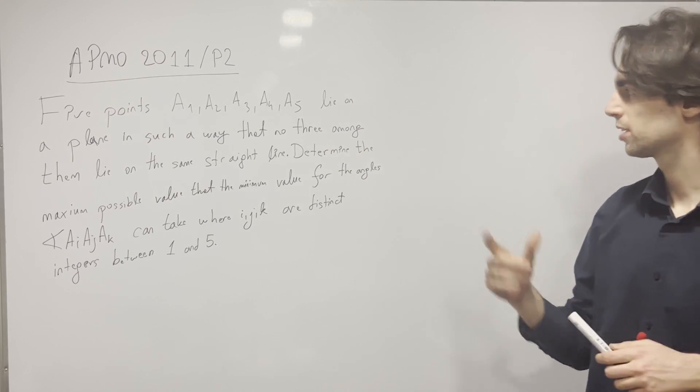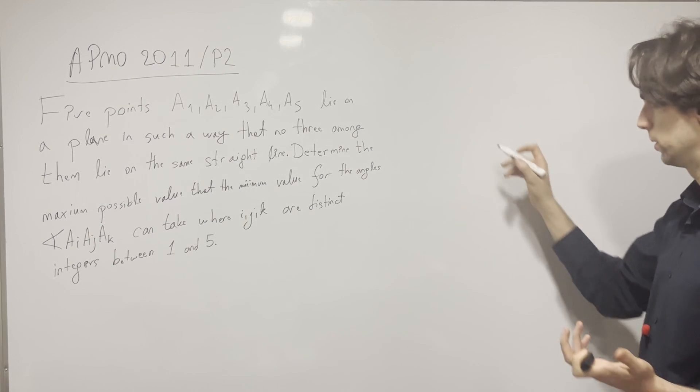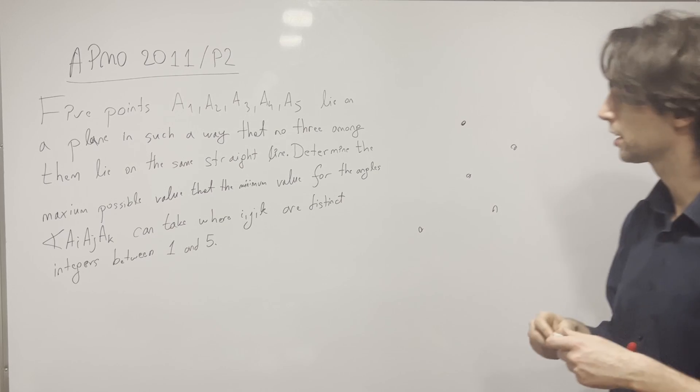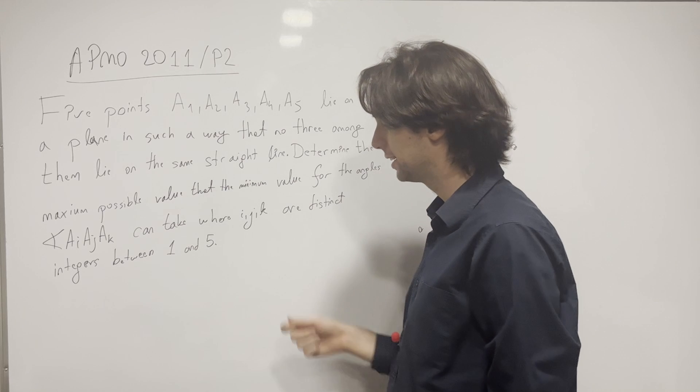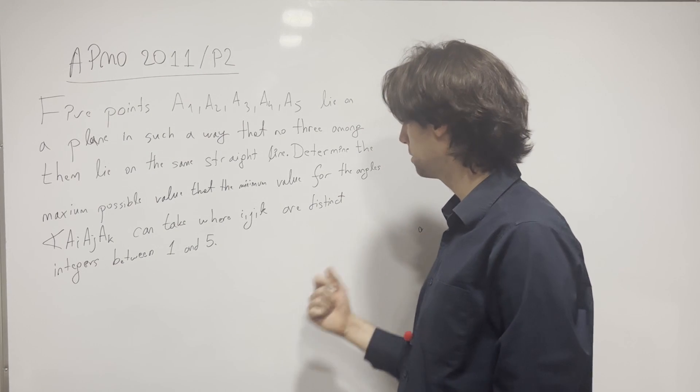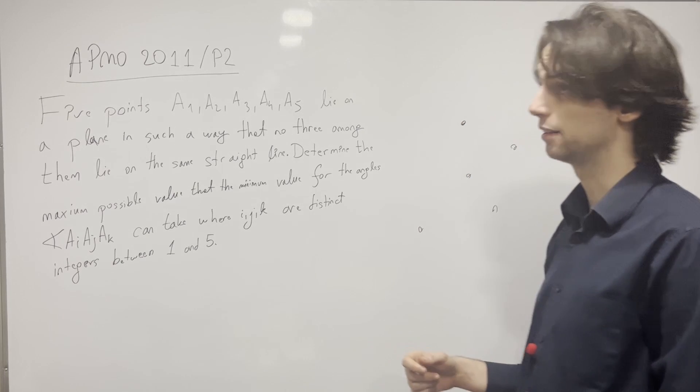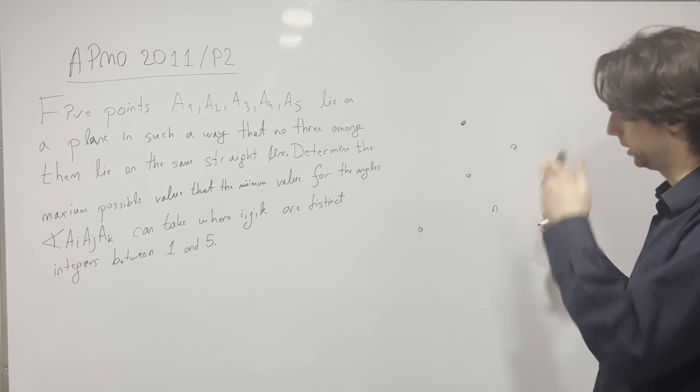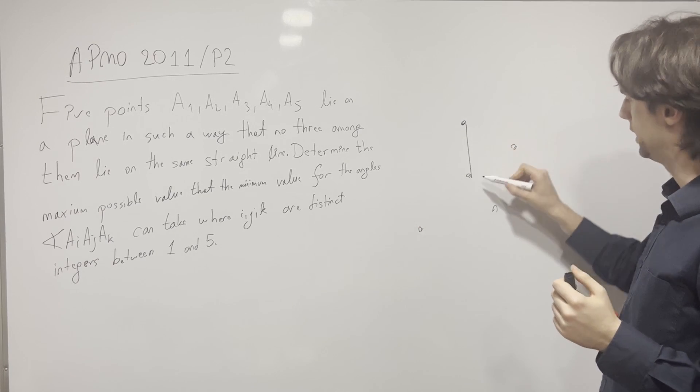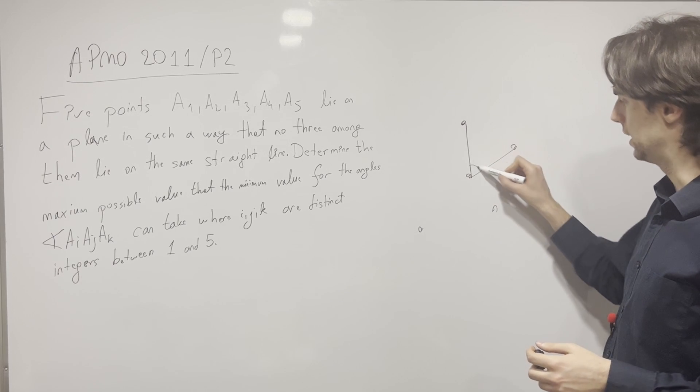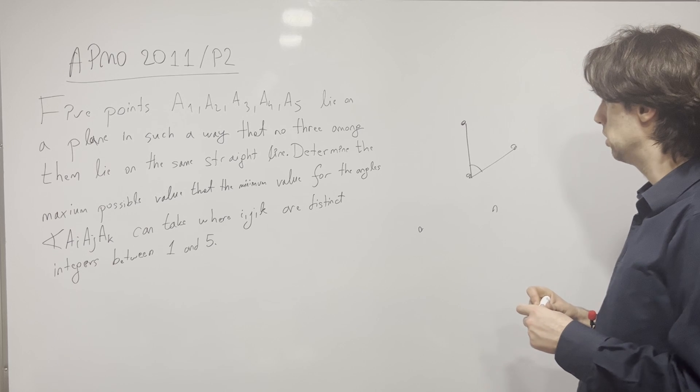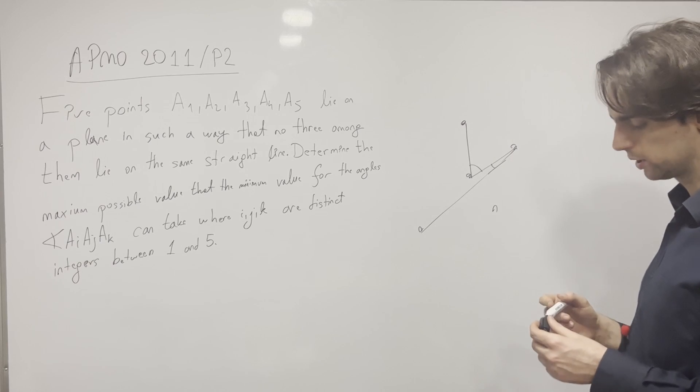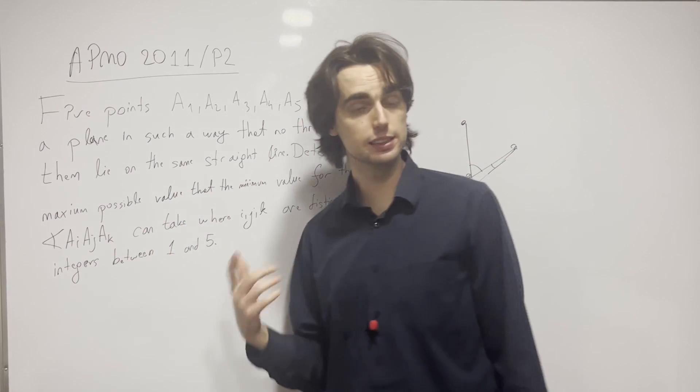So let's see, we have 5 points on a plane such that no three are on the same straight line. Say this configuration. And we must determine the highest value the minimum value of the angles can get. So what we're saying is, among all these pairs of angles that are between these 5 points, there is some triplet that has the smallest angle. And we're looking to say, what is the highest possible value this thing can be?